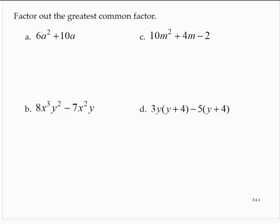So for 6a squared plus 10a, 6 and 10 share a factor of 2, and a squared and a share a factor of a. So then we can write that 6a squared plus 10a is equivalent to 2a times the quantity 3a plus 5. And we have factored out the GCF, the greatest common factor.